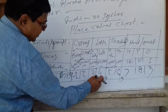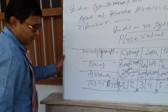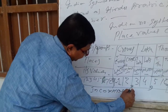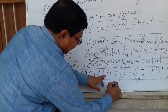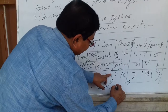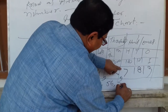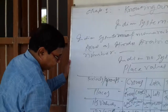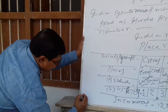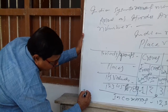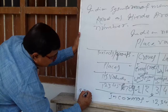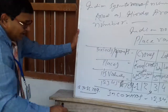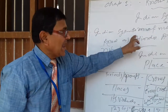In commas, the number is twelve crore, thirty four lakhs, fifty six thousands, and seven hundred eighty nine. Now using the gaps method: twelve crore, thirty four lakhs, fifty six thousands, and seven hundred eighty nine. Now we learn its place value and write in expanded form.